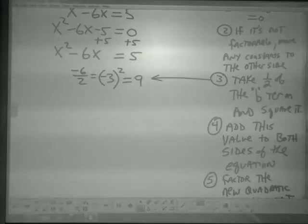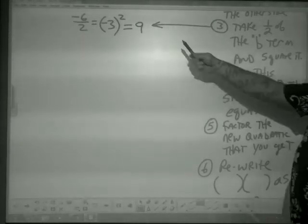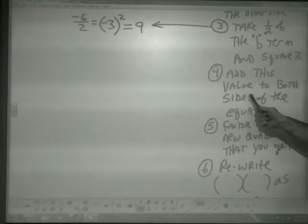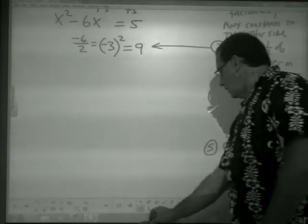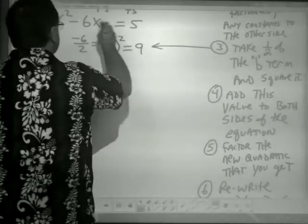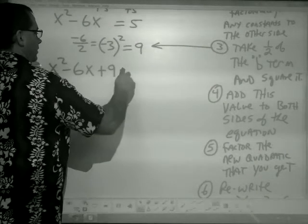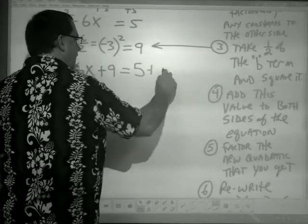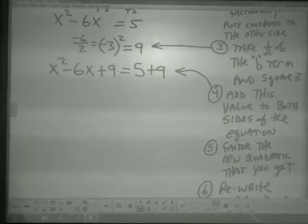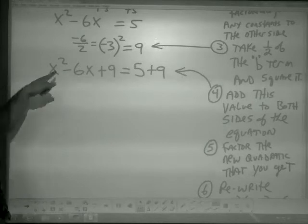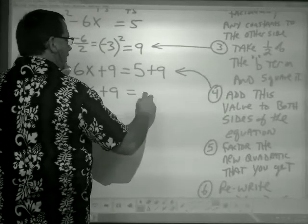Step 4: add this value of 9 to both sides of the equation. Going back to our equation, I add 9 to both sides: x² - 6x + 9 = 5 + 9. Cleaning that up: x² - 6x + 9 = 14.